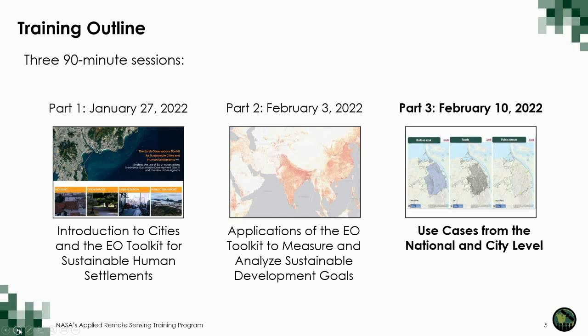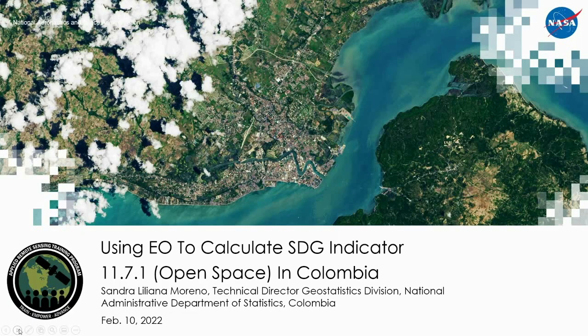Today we are covering part three on use cases from the national and city level. It is my pleasure to introduce Sandra Liliana Moreno, who is the technical director of the Geostatistics Division of the National Administrative Department of Statistics in Colombia. Sandra will be talking to us about how they have used Earth observations to calculate SDG indicator 11.7.1 on access to open public spaces in Colombia.